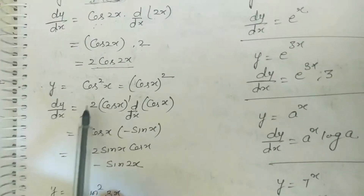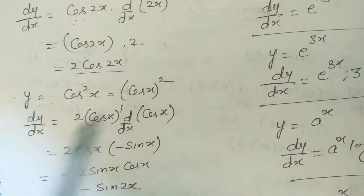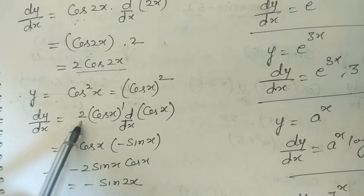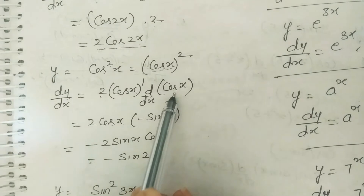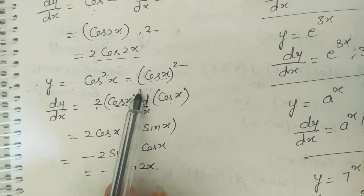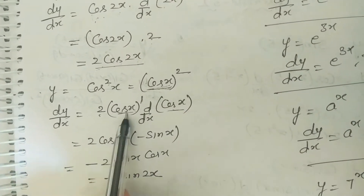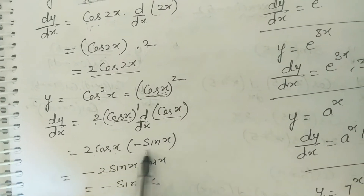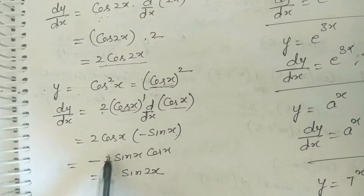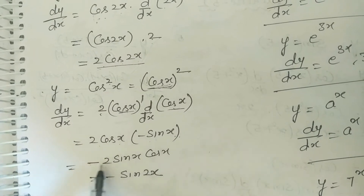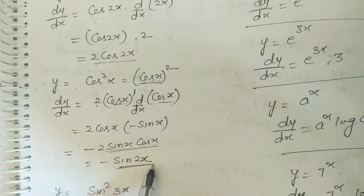Example: derivative of cos²x, written as (cos x)². Using chain rule: 2·cos x · d/dx(cos x) = 2·cos x·(−sin x) = −2 sin x cos x = −sin 2x, using the identity 2 sin x cos x = sin 2x.